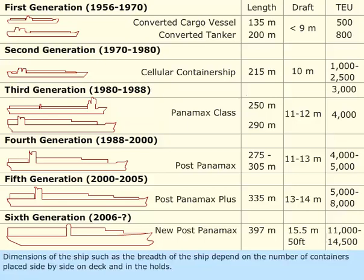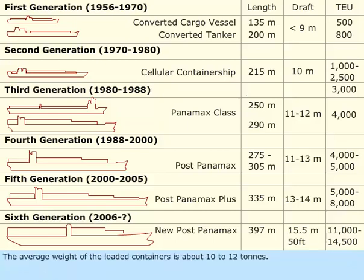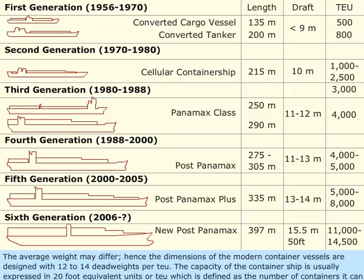The dimensions of the ship, such as the breadth, depend on the number of containers placed side by side on deck and in the holds. The average weight of loaded containers is about 10 to 12 tons, though the average weight may differ.